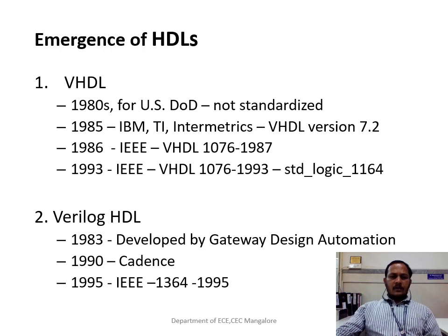In 1983, Gateway Design Automation found the first language of Verilog. After that in the 1980s, the company GDA was purchased by Cadence, and they developed Verilog HDL. After that in 1995, it got standardized. This is the history of Verilog HDL.